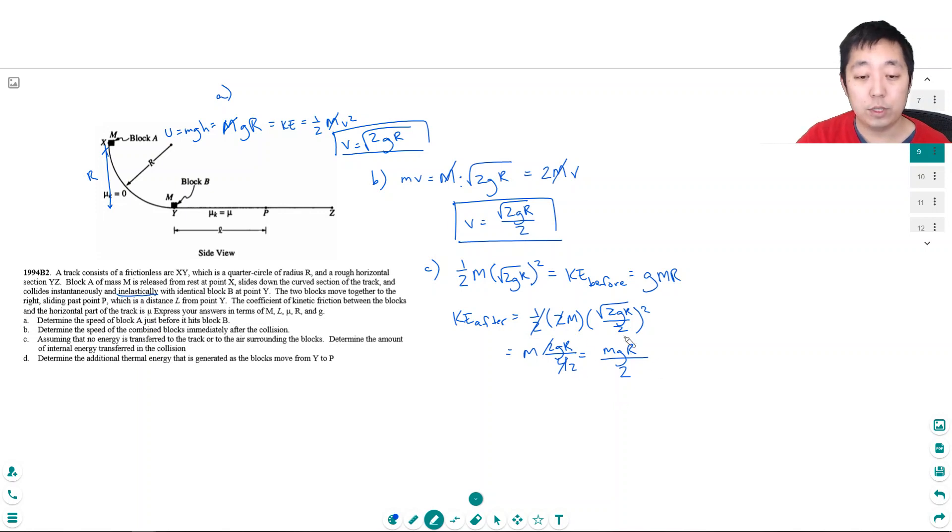So how much did we lose? The difference is gmr minus gmr over two, that's just equal to gmr over two. So that's how much energy was lost, lost half the energy basically, right, because this is two over two minus one, so it's gmr over two.